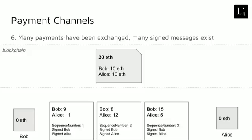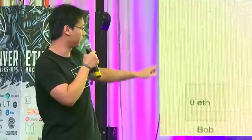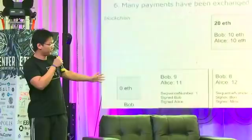Let's say we've been using this payment channel for six months and we decide to close it. Looking at this series of messages, we see that Bob has paid Alice one Ether, then Bob paid Alice one Ether again, and then Alice paid Bob seven Ether, to get a final balance of Bob 15 Ether and Alice five Ether. There's a sequence number for each of these messages going from sequence number one to two to three. That's part of the signed message, and it represents which one of them is newer.